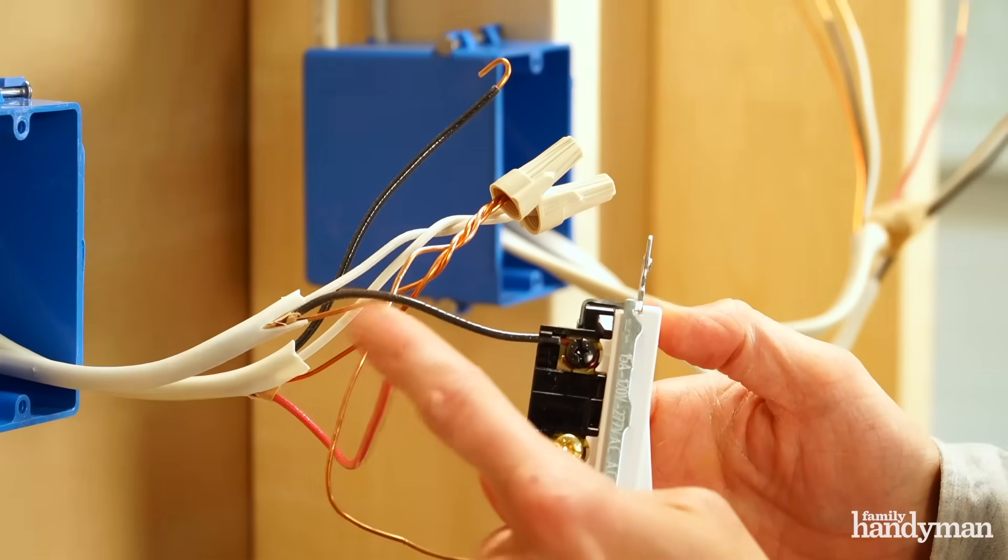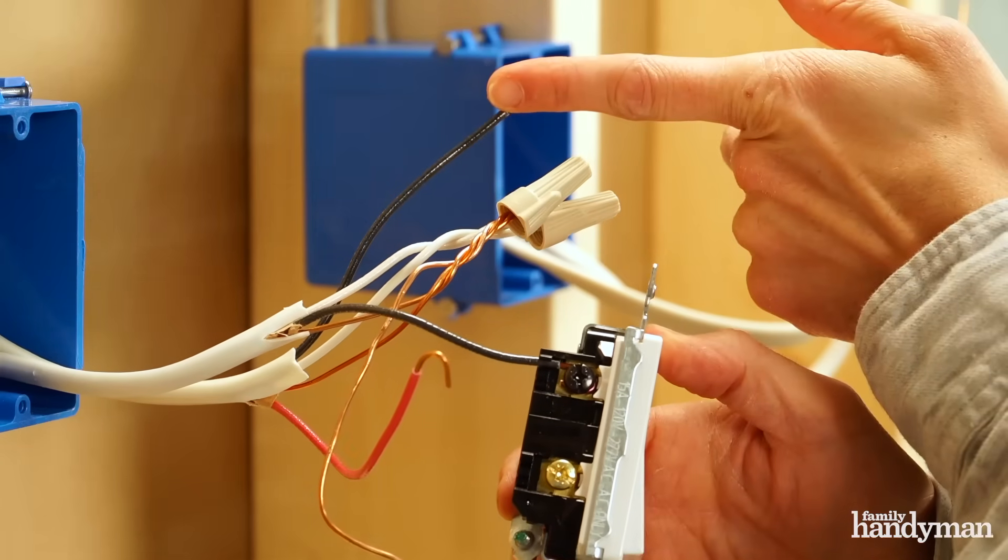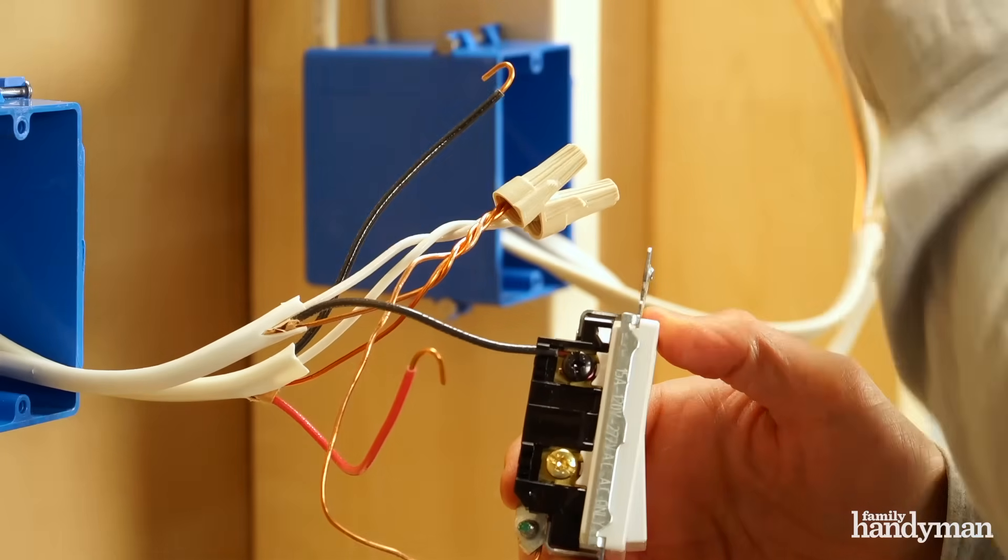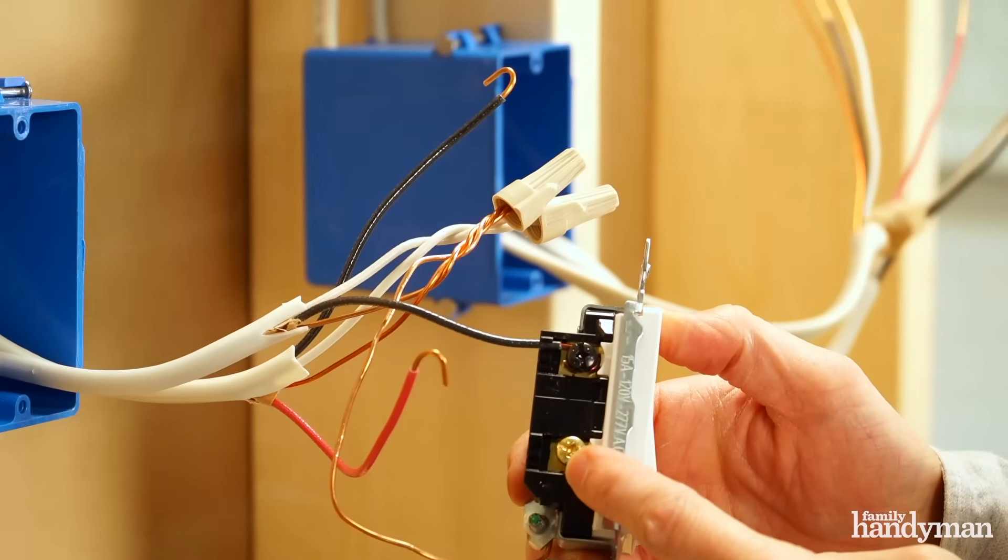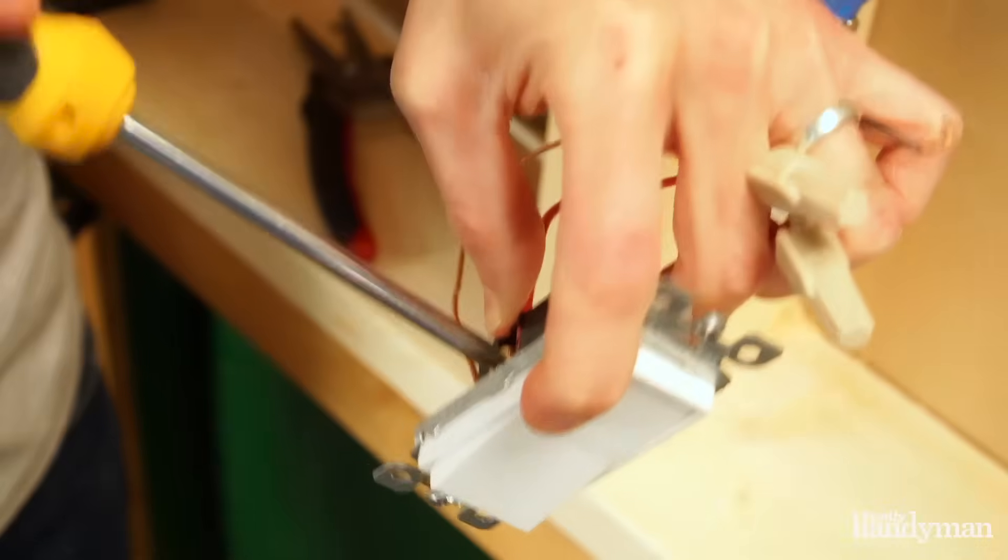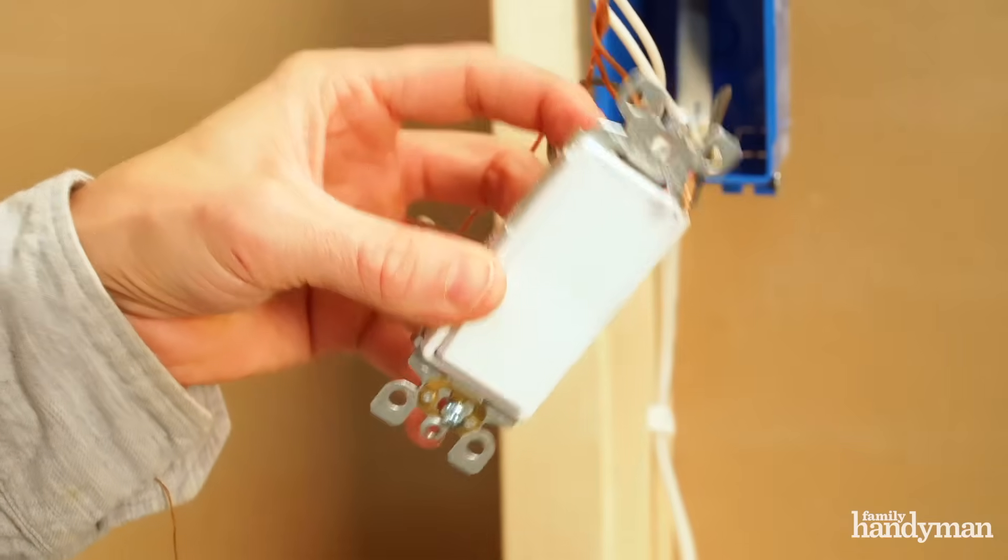Now you're going to connect the red wire and the black wire from the cable between the two switches to the traveler terminals. One on this side and one on the other side.